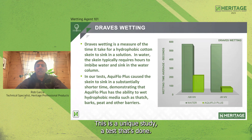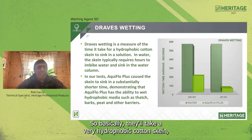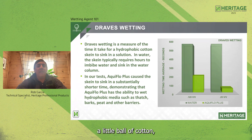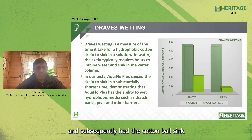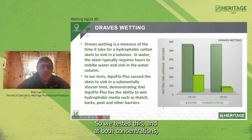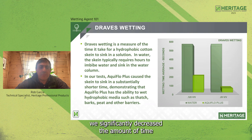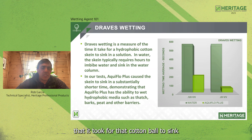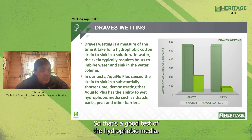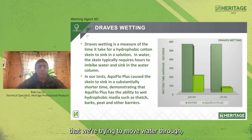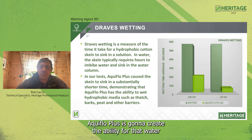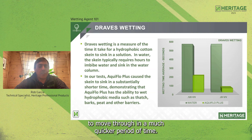The Draves wetting test uses a hydrophobic cotton ball placed into the solution to measure how long it takes for water to penetrate and cause the cotton ball to sink through the water column. At both concentrations, AquaFlow Plus significantly decreased the time for that cotton ball to sink — a good test of penetrating hydrophobic media such as thatch, bark, peat, and other organic barriers. When water moves through these barriers more quickly, it is less likely to be lost to evaporation from high daytime temperatures and low humidity.